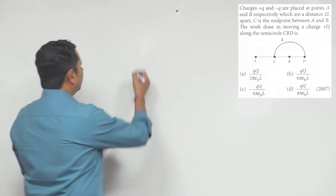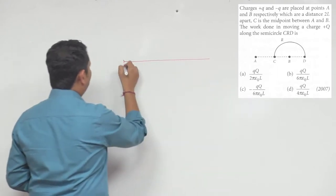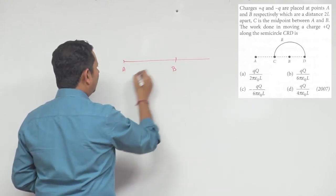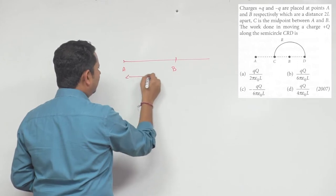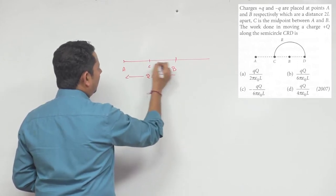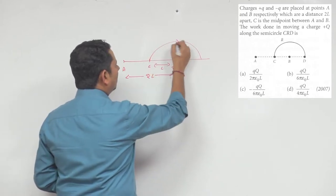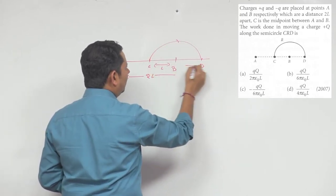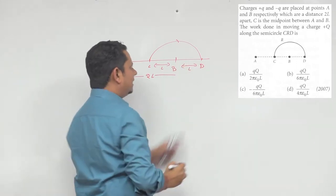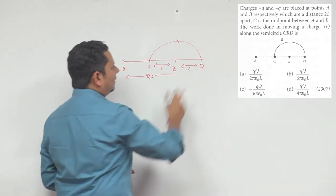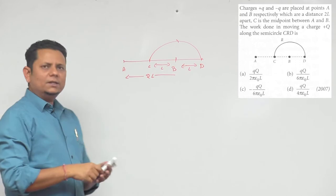So the situation is like this: this is your point A, this is your point B. The distance between them is 2L. Here is your point C. The distance between these two is L. We take a particle from here along a semicircular path to this point D. It's not given exactly here, but we can assume that the location of path D will also be at distance L.